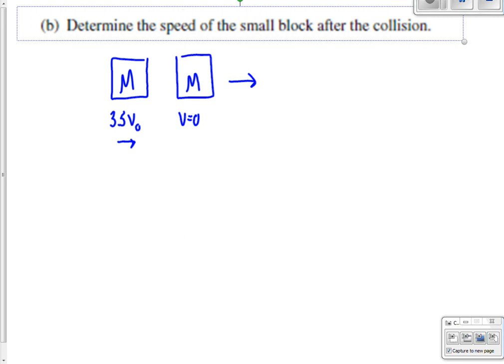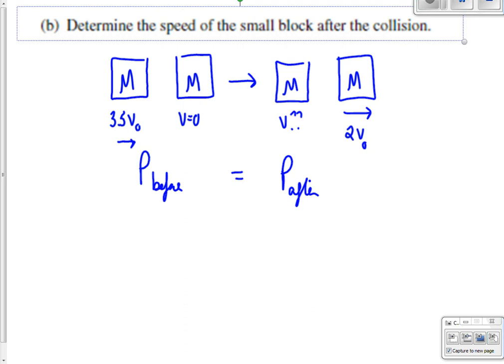And then it says, as a result of this, we have this block m travels off at 2 v initial. And then the first block m, we're not really sure what happens with that. So that's why we need conservation of momentum. So we do know that the momentum over here does have to equal the momentum over here.